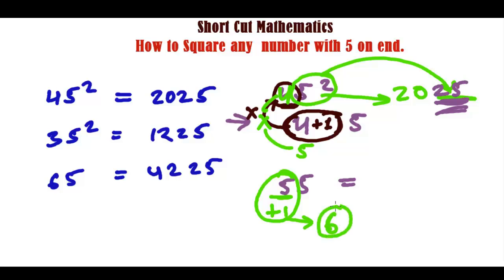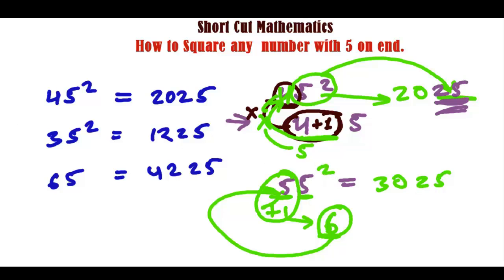And whatever the number you got as a result, you have to multiply with the initial one. Initial one is 5 here. So 6 times 5 is 30, and as always add square of 5, that is 25. So 30 25 is the square of 55. That's it, very simple. Let's take some few more examples for more practice.